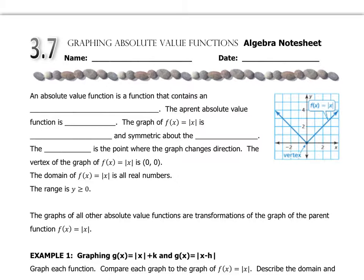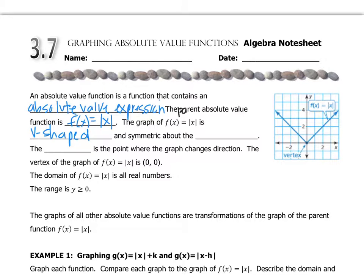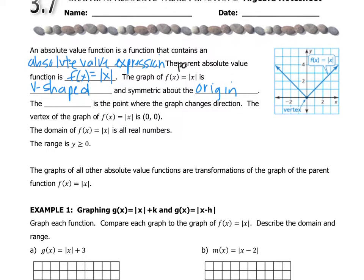An absolute value function is simply a function that contains an absolute value expression. The parent absolute value function is f(x) = |x|. That graph is what we call V-shaped — all absolute value functions are V-shaped. You can see in the picture it makes the shape of a V, and it's symmetric around the origin. The vertex is the point where it shifts directions and the graph turns; the vertex of the parent function is (0, 0).